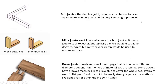The butt joint is the simplest — you just take two pieces of material and stick them together. It has very little strength and is likely to break if knocked. A miter joint is very similar but cut at 45 degrees (or another angle depending on the shape required). It's still quite weak and requires glue, but it looks neater than a butt joint and can be reinforced with additional fixings.